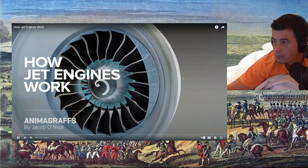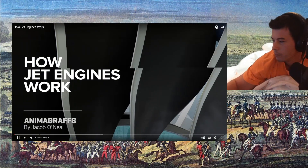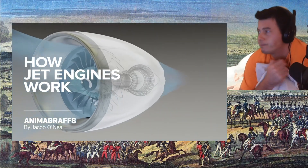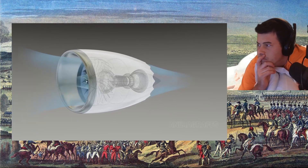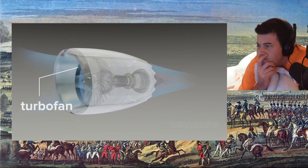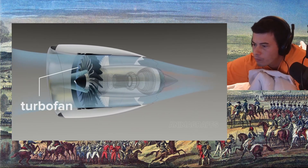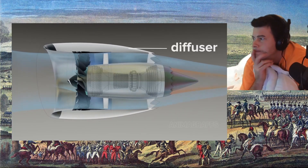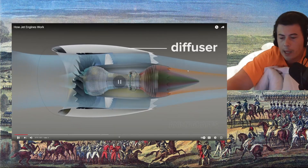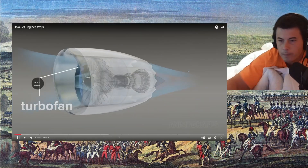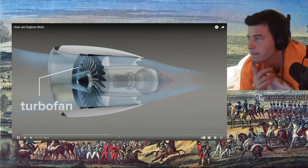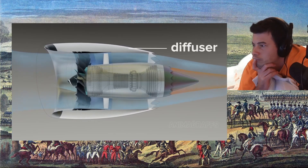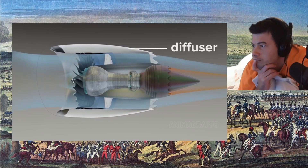And this is how jet engines work. I'm Jake O'Neill, creator of Animagraphs. And this is how jet engines work. Most jet-propelled airplanes use a turbofan design. The turbofan can be thought of as a high-tech propeller inside of a duct called a diffuser, driven by a gas generator.